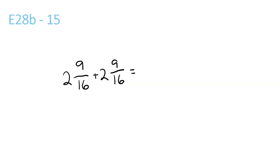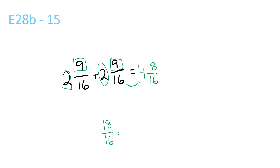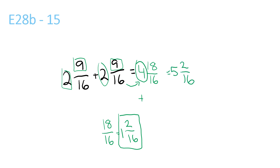For this question, it's just 2 plus 2, which is 4. Then the top numbers, 9 and 9 — 9 plus 9 is 18. Then we bring this number over: 16. And 18 over 16 is the same as 1 and 2 over 16. So it's that number plus the 4 — add them together and you get 5 and 2 over 16. Since 2 over 16 can be simplified by dividing both by 2, it would be 5 and 1 over 8.